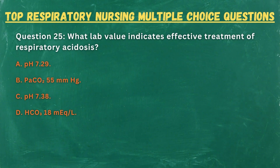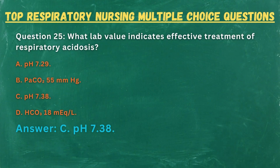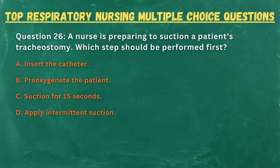Question 25. What lab value indicates effective treatment of respiratory acidosis? A. pH 7.29. B. PaCO2 25 mmHg. C. pH 7.38. D. HCO3 18 mEq. Answer: C. pH 7.38.